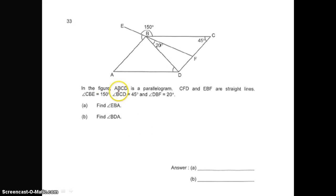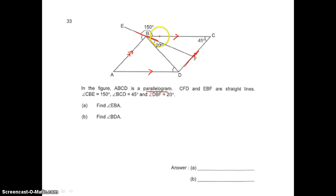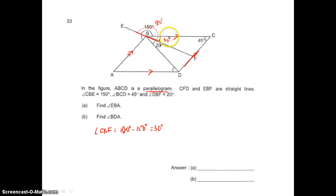Question 33. In the figure, ABCD is a parallelogram - remember to draw parallel lines. CD, FC, FD, and EB, EF are straight lines. The angles are given. From the straight line, this whole angle is 180 degrees, so 180 minus 150 gives 30 degrees. Therefore angle CBF is 30 degrees. With a parallel line, I can find alternate angles. This angle is the same as that angle, so angle BDA is 50 degrees, which is 30 plus 20 degrees.